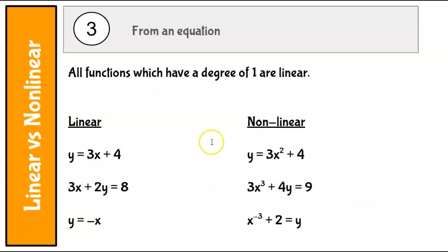All right, our last thing to talk about is from an equation. So from an equation, all functions which have a degree of 1 are linear. All functions which have a degree of 1 are linear.